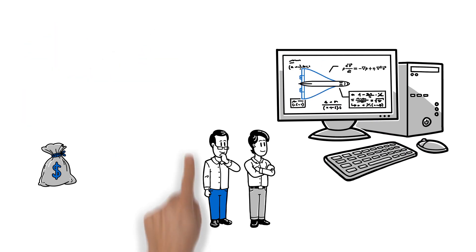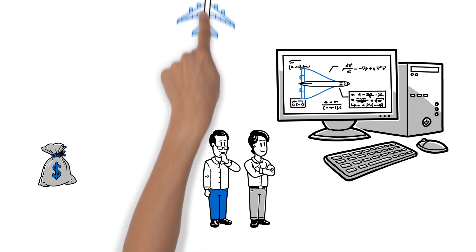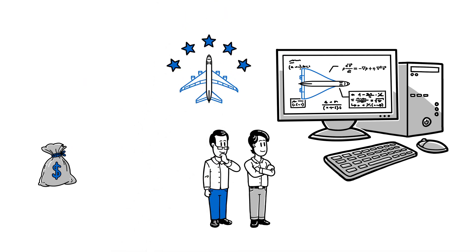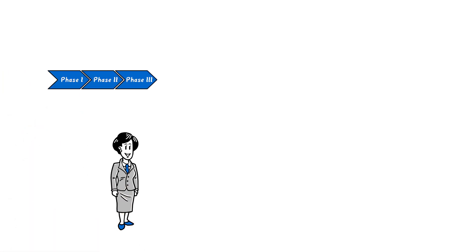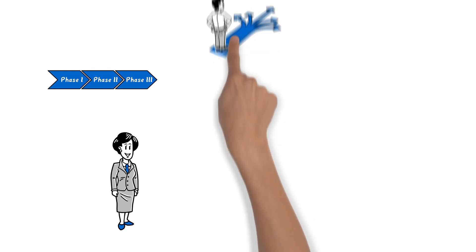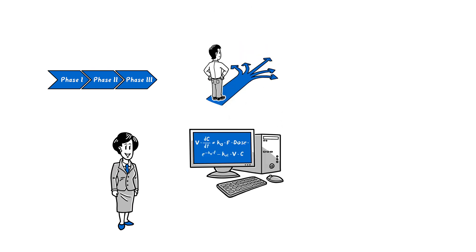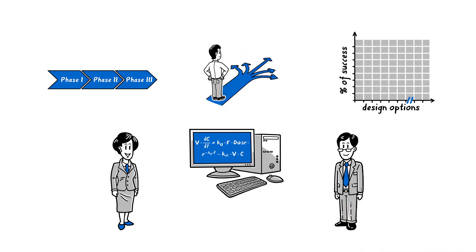In the end, the airplane with the best results during the simulations is built. Annie describes how a similar approach can be used in drug development to help project teams make more informed decisions. By using computer models, Joe can predict the outcomes of different clinical trial design options.